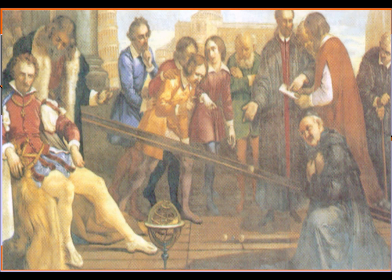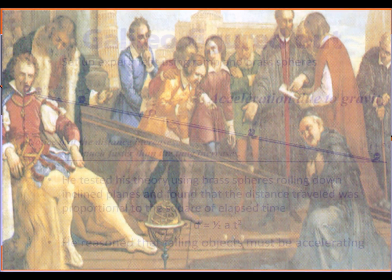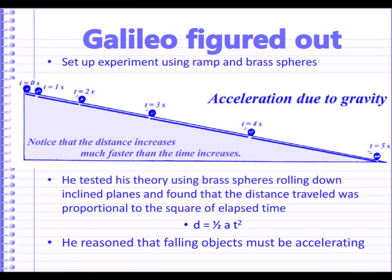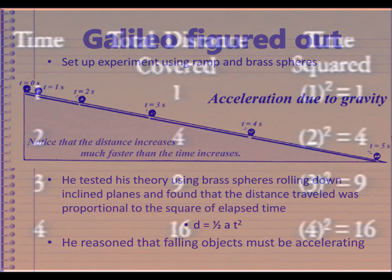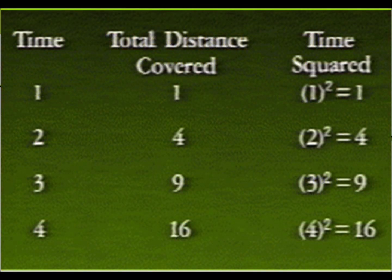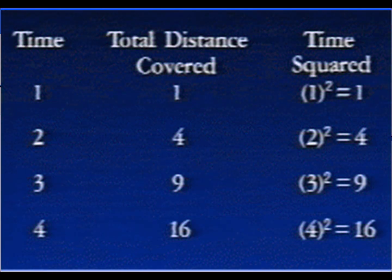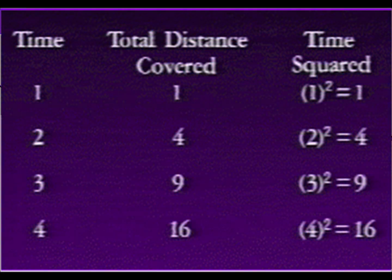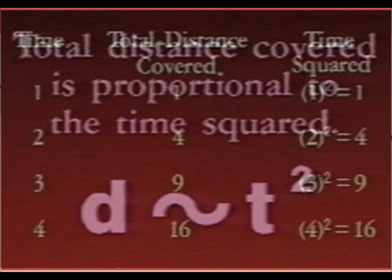He found that acceleration acting uniformly on a falling object does so geometrically in such a way that the distance covered is directly proportional to the square of the time, as we can see in this table representing the data of his experiment. In Galileo's calculations, the total distance covered equals the square of the time.